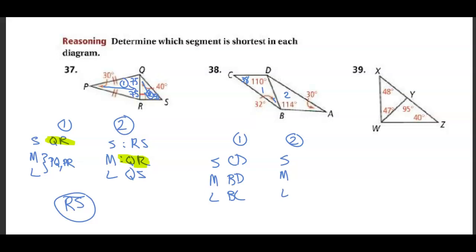For triangle 2, to find that third angle, we subtract 114 and 30 from 180, giving us 36 degrees. So the smallest side is BD, the medium side is AB, and the largest side is AD. BD appears in both triangles — it is the middle side for triangle 1 but the smallest side for triangle 2. That means CD is smaller than BD, so CD is the smallest side.